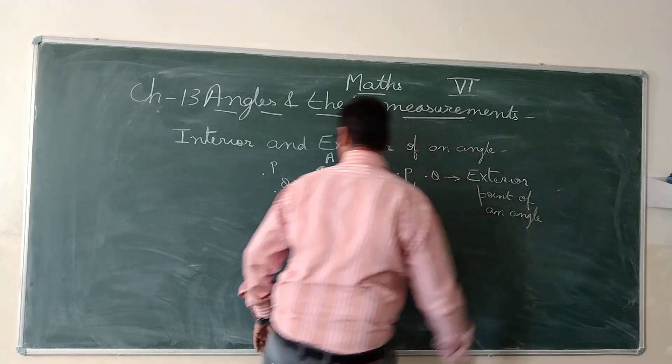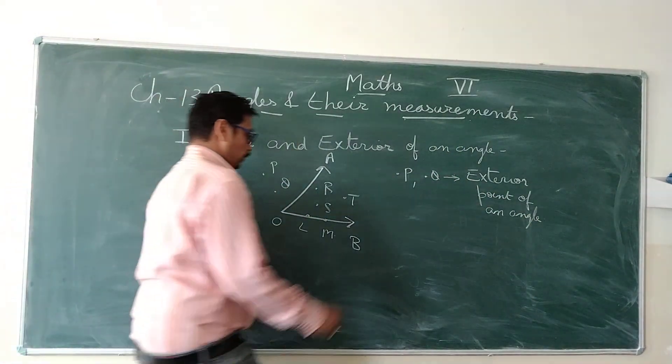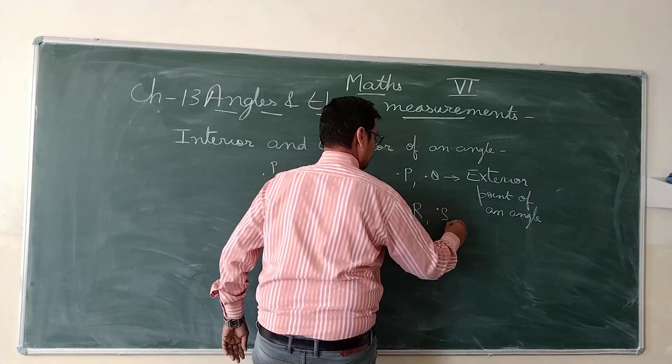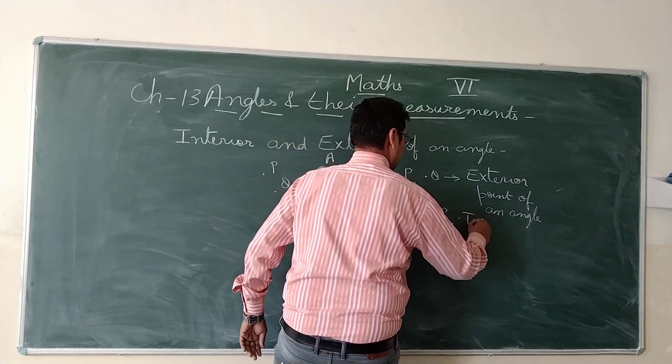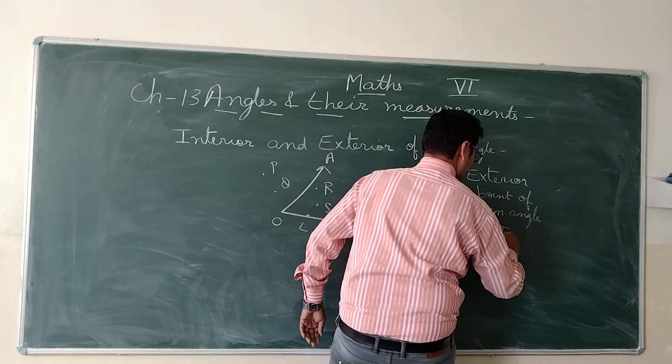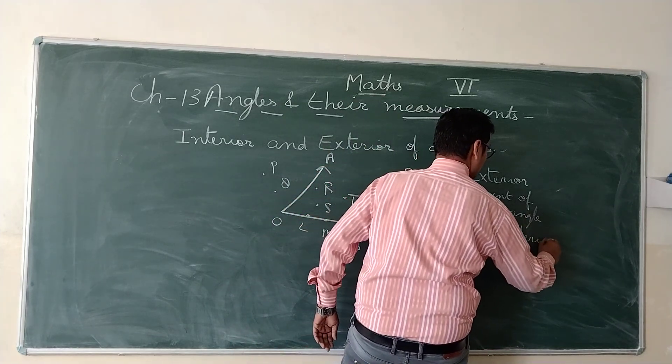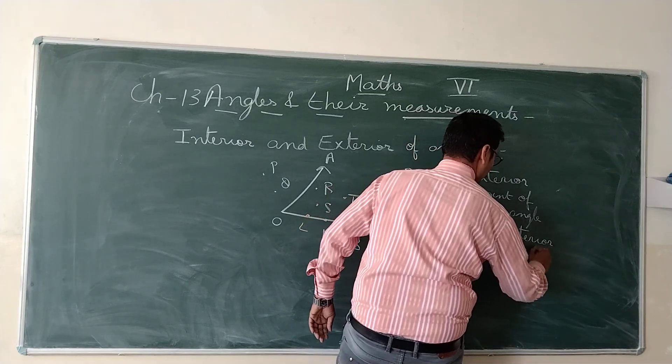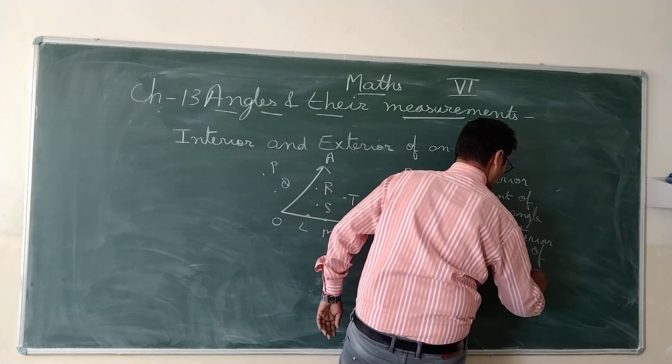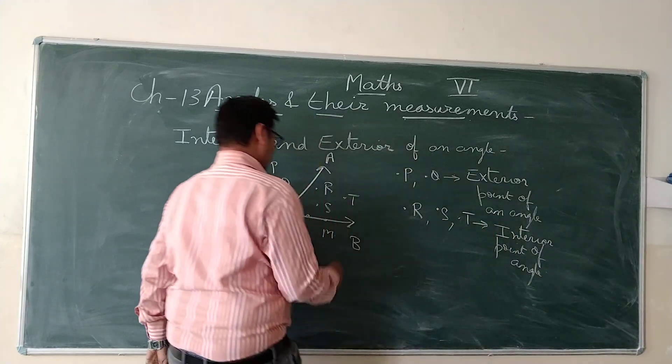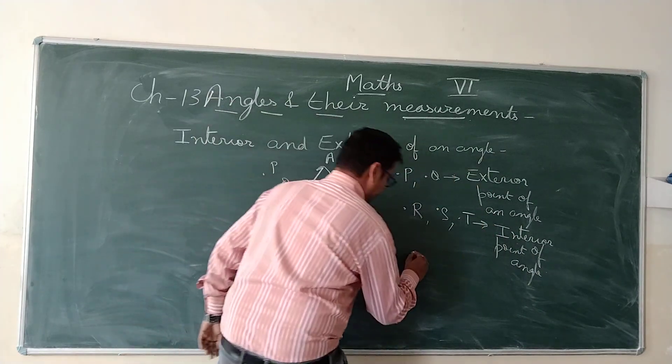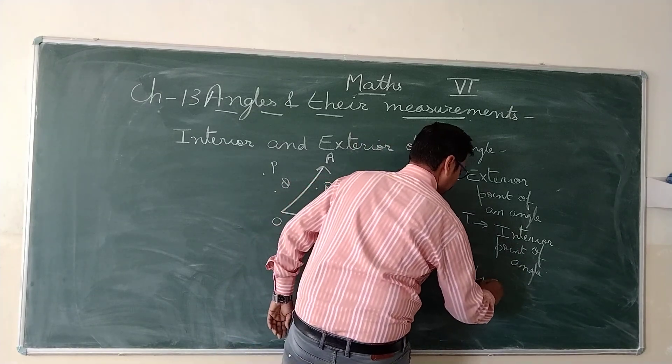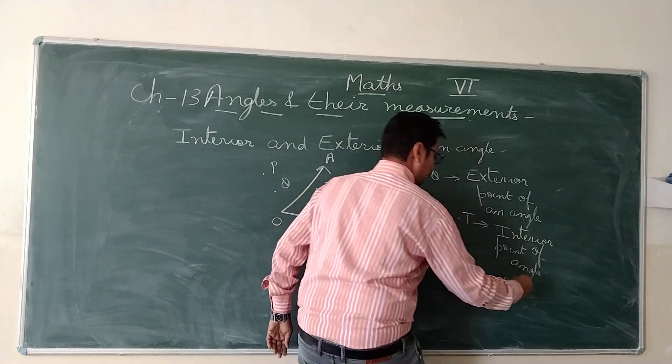Why? Because they lie outside it. And the point R, point S, point T - they are interior points of angle. And the point L, M, point L, point M - they lie on boundary of an angle.